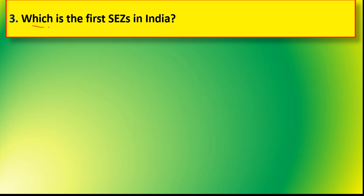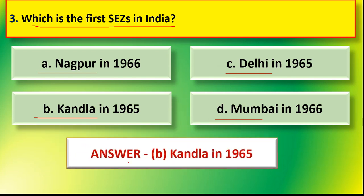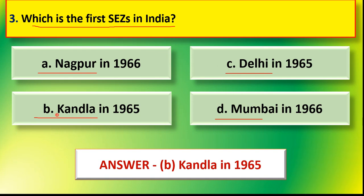Next question: which is the first special economic zone in India? Options are option A Nagpur, option B Kandla, option C Delhi, option D Mumbai. The first special economic zone in India is option B Kandla. Kandla is the first special economic zone in India.